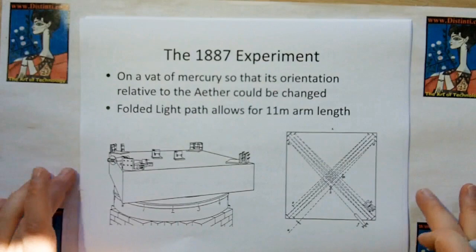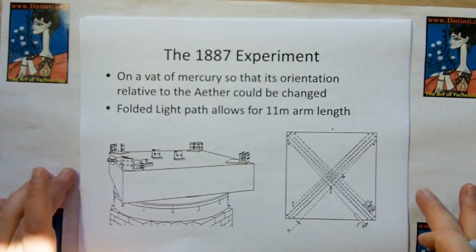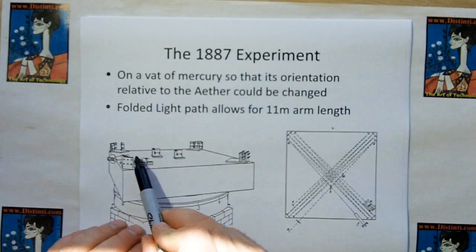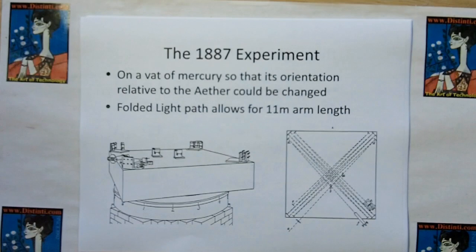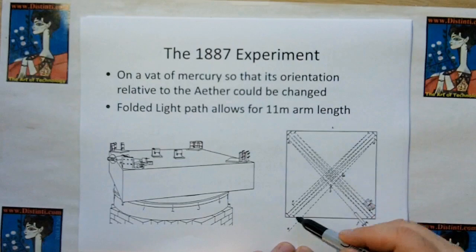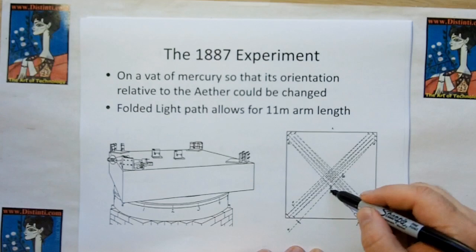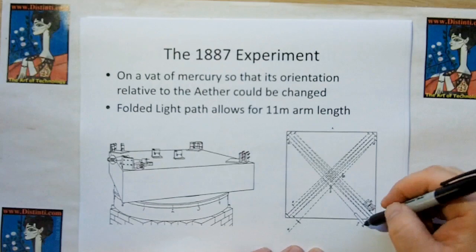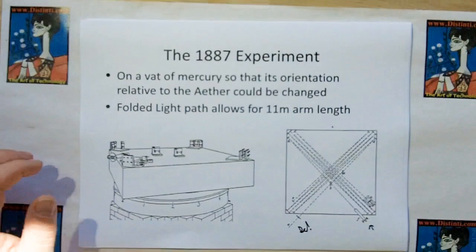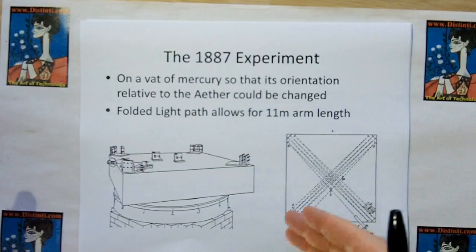In the 1887 experiment, there are many mirrors because they wanted to make the experiment as large as possible while keeping a small footprint. They kept bouncing the beam back and forth to give an effective distance of 11 meters, even though it was on a small table. Here's the source, the partially reflective mirror splits the beam, and the detector receives the recombined beams. By folding the light path back and forth, they multiplied the effective arm length to increase sensitivity — the longer the arms, the more fringe shift expected.